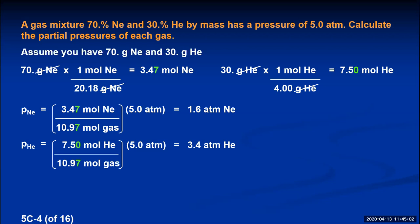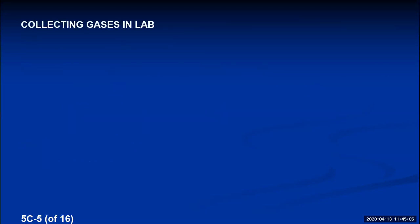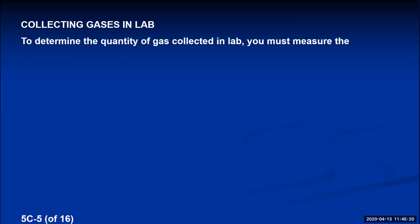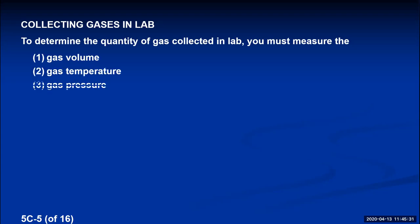This is relevant when collecting gases in the lab. To calculate the quantity of a gas collected, you need to measure its volume, temperature, and pressure. With those three values and the ideal gas law PV = nRT, you can solve for moles: n = PV / RT. Gases are typically collected in a long glass tube called a eudiometer, filled with liquid, inverted into a beaker.